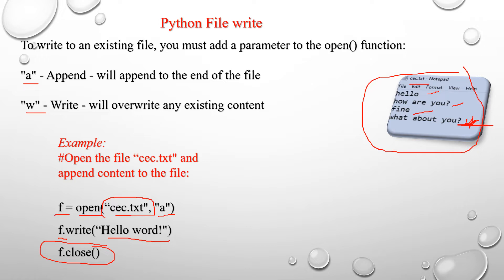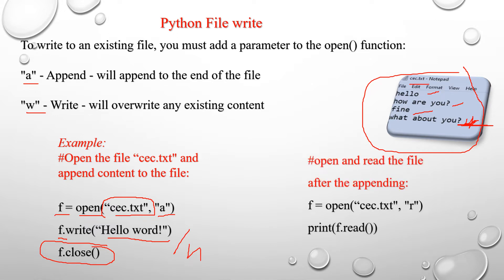If you want to add a new line, you can use the newline character '\n'. If you open and read the file after appending, we use read mode. The file variable is f, using the built-in open function with file name cec.txt and read mode. Then we print f.read(). After appending, if you run this, the Python interpreter will print: allow, how are you, fine, what about you, and the appended allow word. If you use '\n' before allow, the word appears on the fifth line.